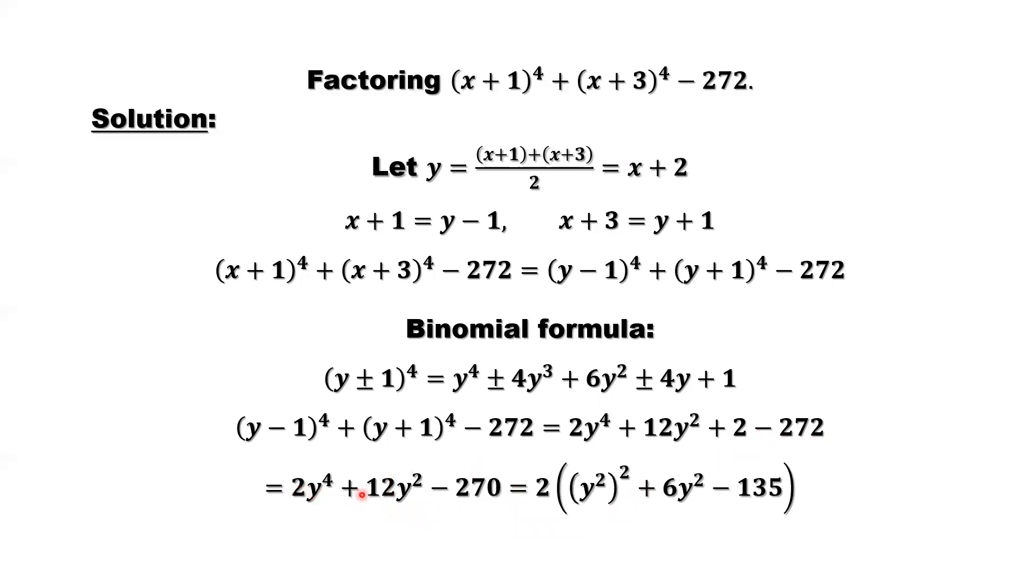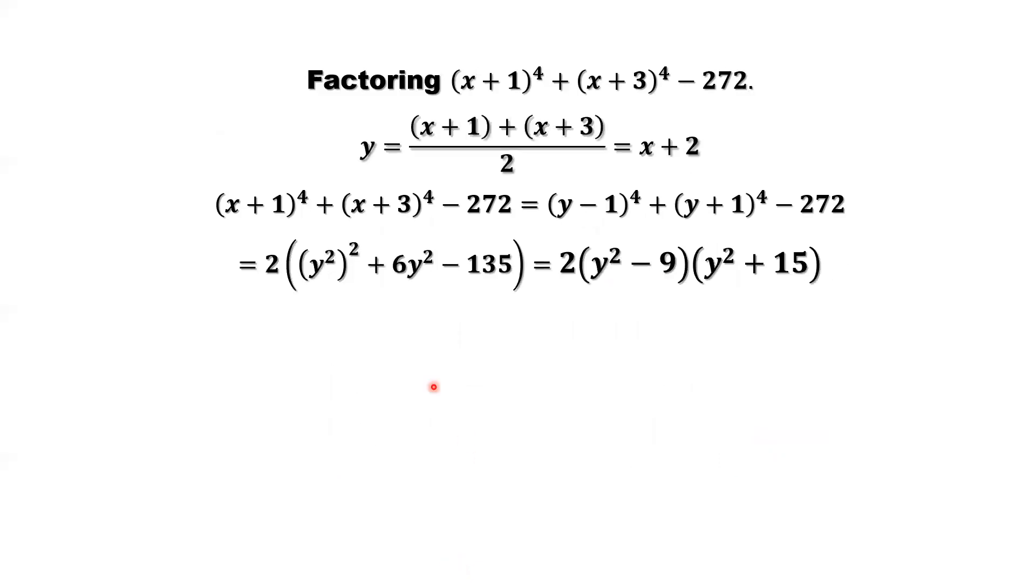So here, all even numbers, we can factor 2 out. Then we have y^4. Rewrite y^4 as (y^2)^2. Then plus 6y^2, then minus 135. So here, if we can see that y^2 is only one variable, like a w. That's w^2 + 6w - 135. We can use the quadratic formula. You can see that's (w-9)(w+15). We can continue to factor the first one, y^2 - 9, which is (y-3)(y+3). So here, because that's plus, we cannot go further if we consider integer numbers, a factorization.